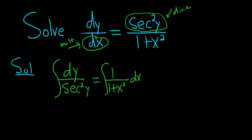1 over secant is cosine. So it's a good idea to rewrite this as cosine squared y dy. And I'll leave this as is. This is 1 over 1 plus x squared dx.